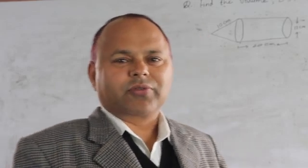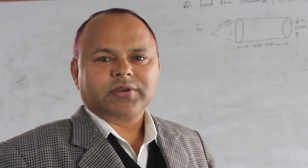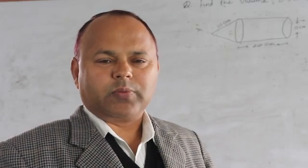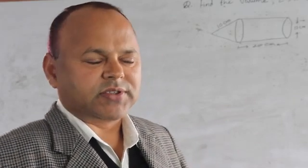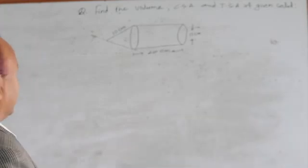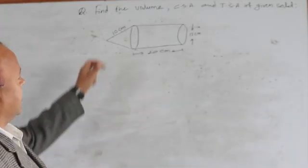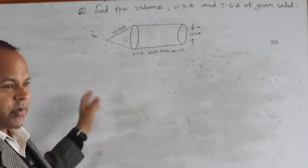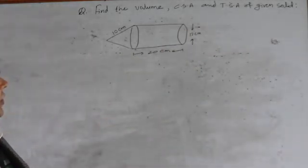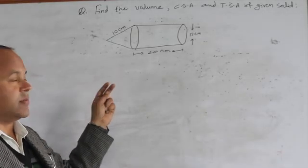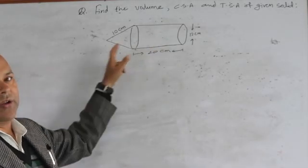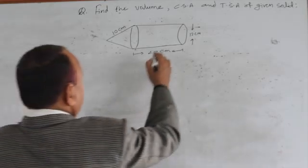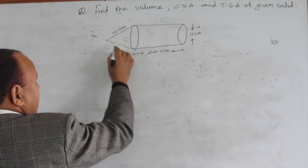Hello everyone, today we are going to discuss how to find the curved surface area, total surface area, and volume of a combined solid. With the help of an example, let us see one example. This solid contains two objects — it is the combination of a cylinder and a cone.